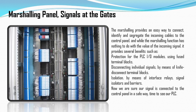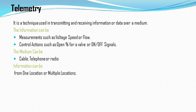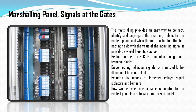The marshalling panel acts as an intermediary between the transmitter and the input module of the PLC. Data first arrives at the marshalling panel with fuse protection. In the event of a short circuit, the fuse burns and protects the system — the PLC, the I/O module, and the process are all saved. The marshalling panel is simply a series of terminal blocks acting as a barrier, and the signal then proceeds to the PLC input module.